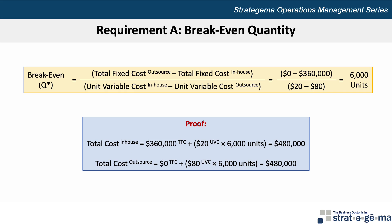Note that in this context, the break-even quantity is the quantity at which you would be indifferent in choosing to produce in-house or outsource. At any expected quantity less than 6,000 units, the company would be better off outsourcing, and at any quantity above 6,000 units, the company would be better off producing in-house.